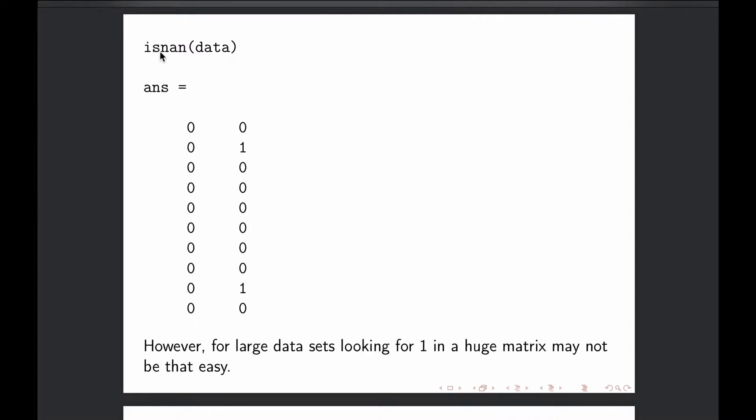And then when we have a bigger data matrix, how do we check for NANs? So of course, we could ask directly isNAN of data, if data was the name for our matrix. And then we will get this result in here, and then we check by hand, okay, there is one here and one here. In the same way, we could actually manually have just checked the data.